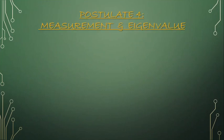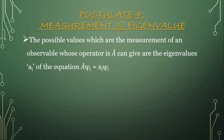First let us discuss postulate number four, which is measurement and eigenvalue. In classical physics, we consider any system and the outcome is simply the measurement or output. But in quantum mechanics, the measurement of any system is calculated only using the eigenvalue. The statement is: the possible values which are the measurements of an observable are the eigenvalues whose operator A-cap gives the eigenvalue equation A-cap ξᵢ = aᵢ ξᵢ.